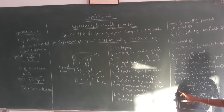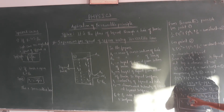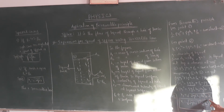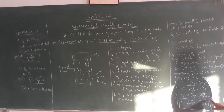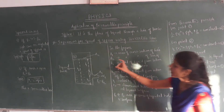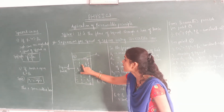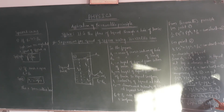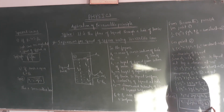V1 equals the square root of: 2g(H2 minus H1) plus 2(P2 minus P0) divided by rho. Since H2 minus H1 is equal to H, this simplifies to: V1 equals root of 2gH plus 2(P2 minus P0) divided by rho. This is the final expression for speed of efflux — consider this as equation 4.